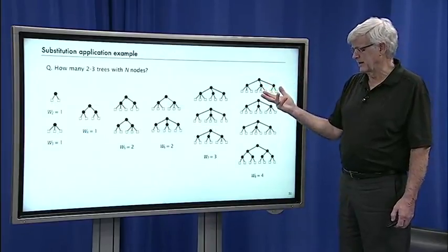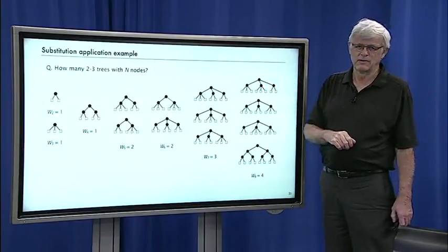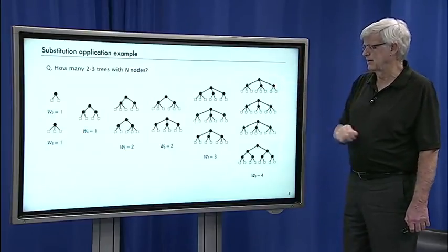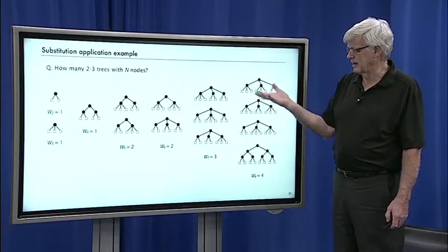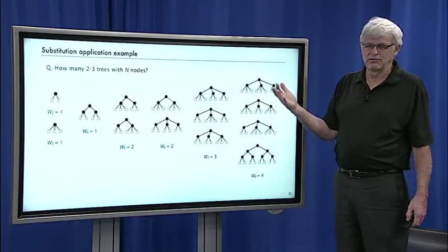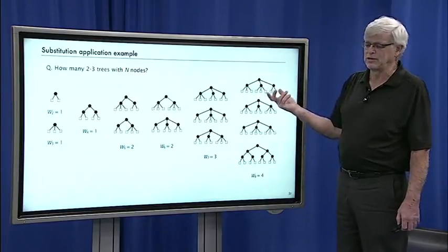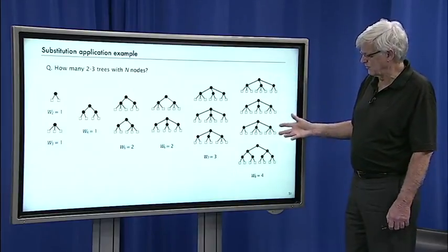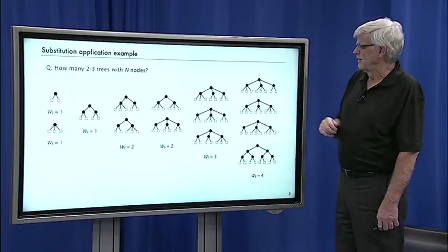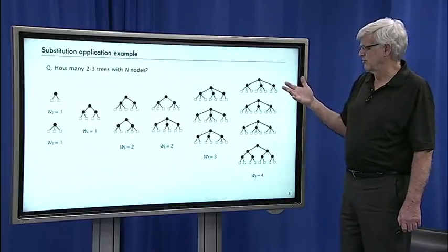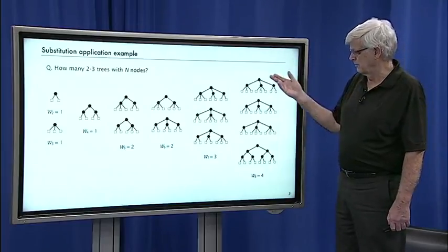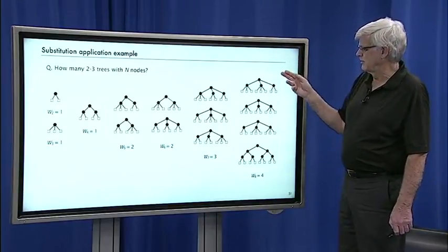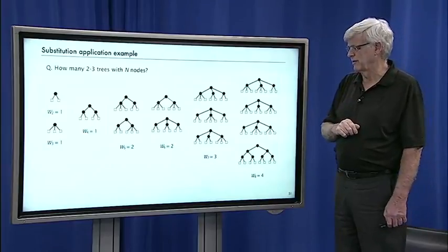The canonical example of that is enumeration of two-three trees. Two-three trees are an interesting combinatorial structure that have important practical applications in computer science, data structures used to implement fast search. They are trees in which the distance from the root to the bottom is always the same and every node has exactly two or three children.